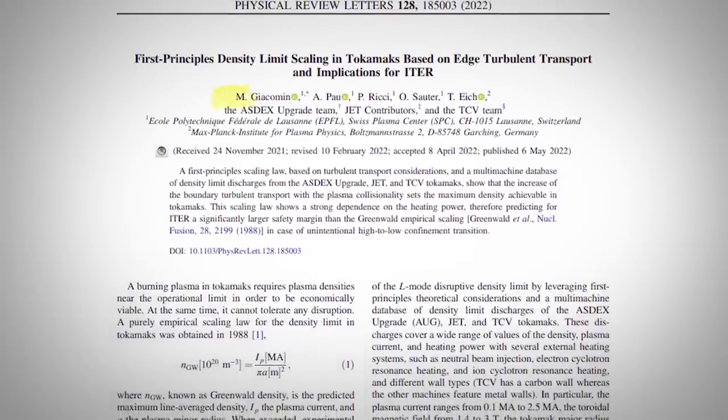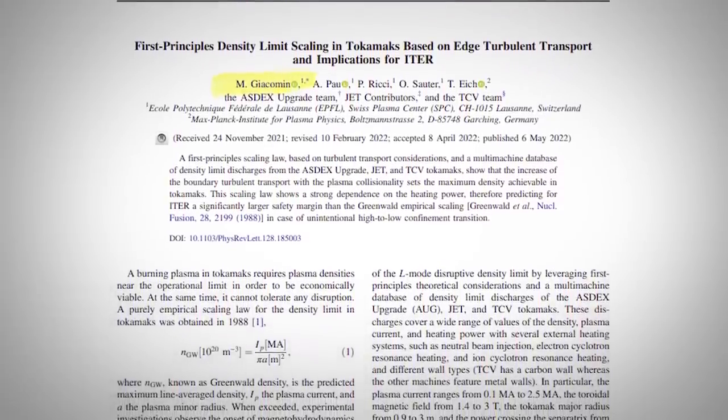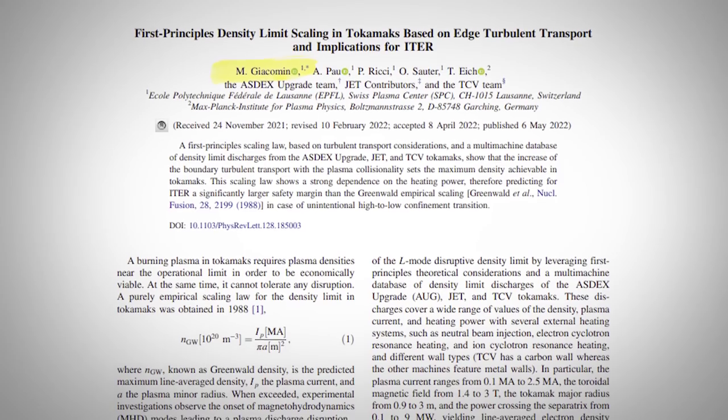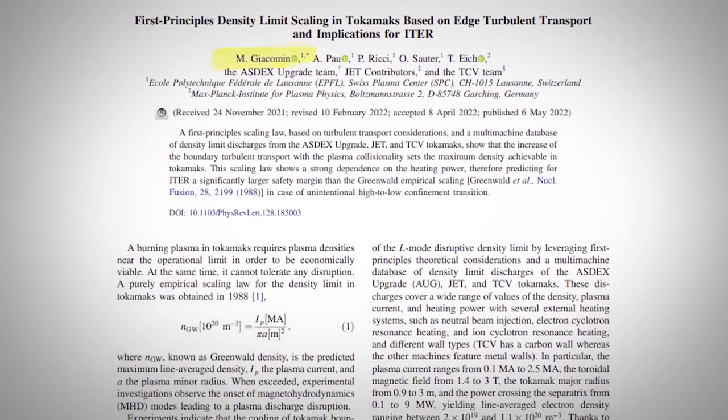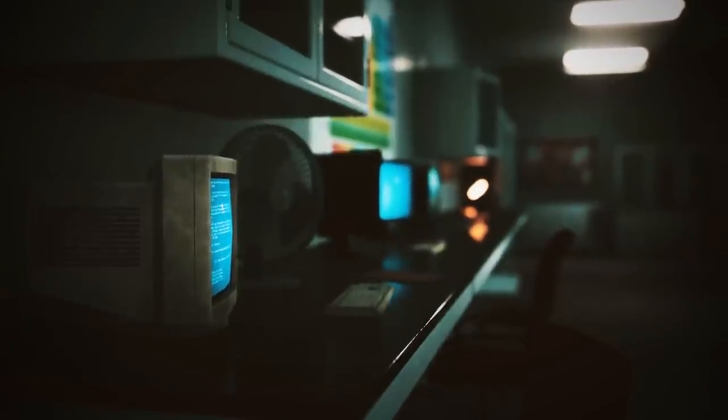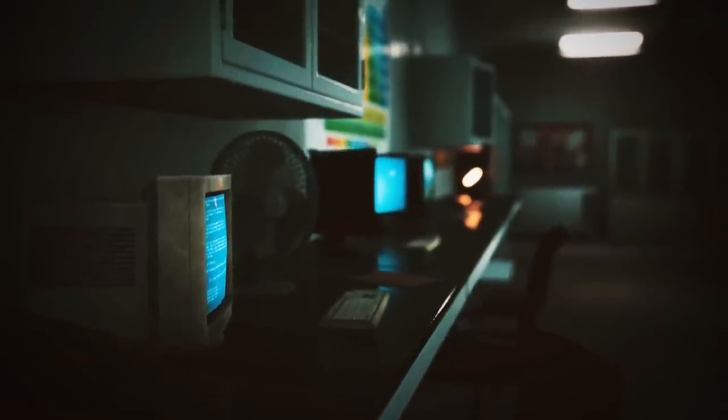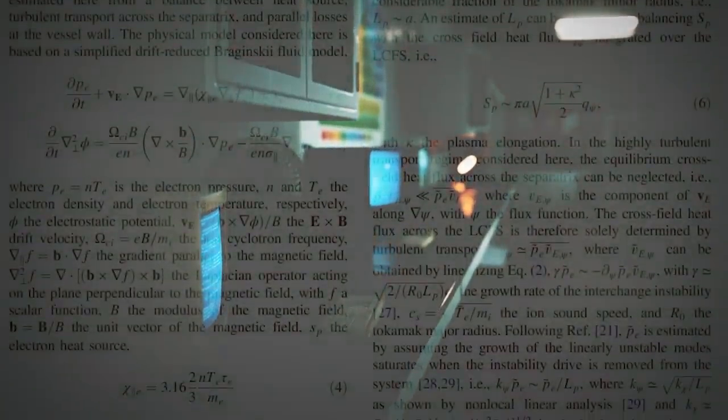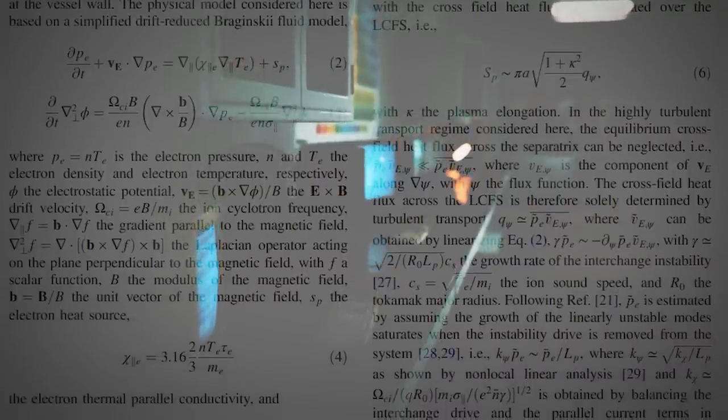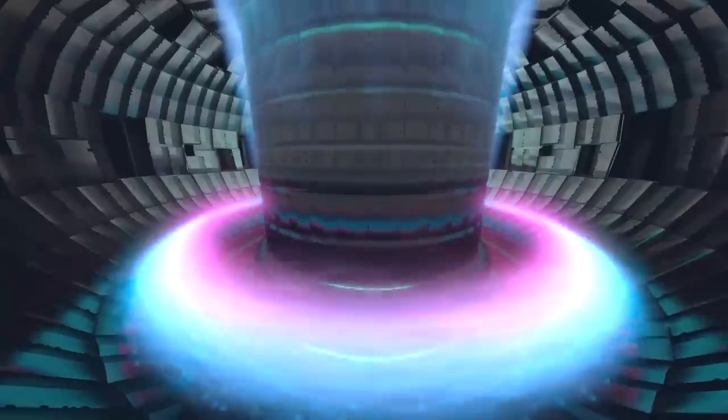Published on the 6th of May by Maurizio Giacomin and his team, a new equation describing the limit for ion density has been proposed. Instead of using experimental data to find this, the equation is based on first principles and includes everything we know about tokamak fusion reactors.